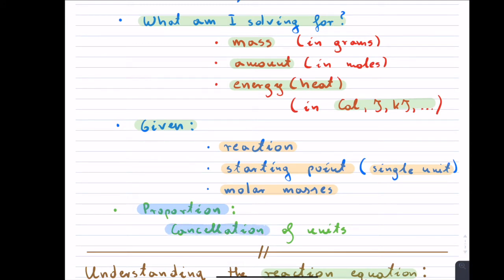Once you have the givens, solving a chemical reaction is really nothing else but a proportion problem — it only involves multiplications and divisions — and that's wonderful because we can use cancellation of units to solve the entire chemical reaction.